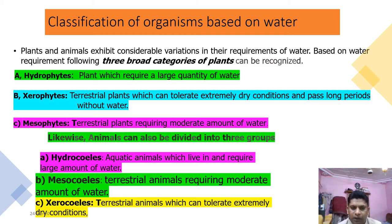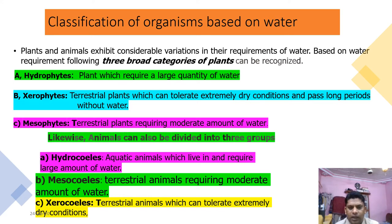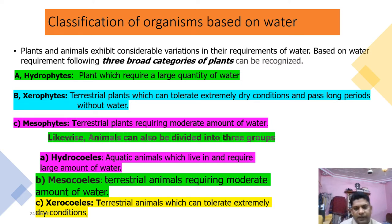Plants as well as animals are classified according to their requirement of water. If availability of water is too much, it will be beneficial for those who need large quantities, but may not be beneficial for those who do not require large amounts. So they are classified accordingly into three categories each.